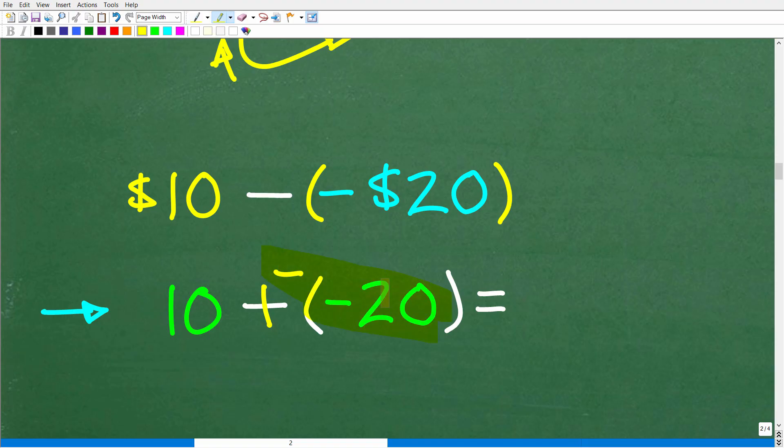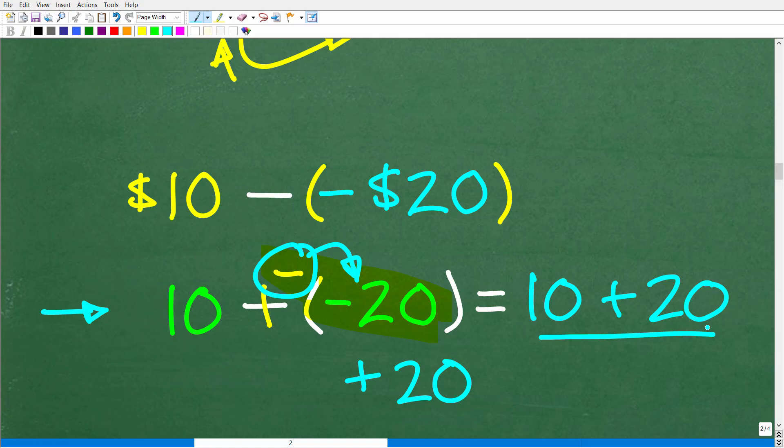Okay, so negative of a negative, the negative sign really means opposite. So what is the opposite of a negative $20? Well, that would be a positive $20. So really this means 10 plus the opposite of a negative 20. That is a positive 20 or 10 plus 20, which, of course, is $30. And our final answer here is $30.